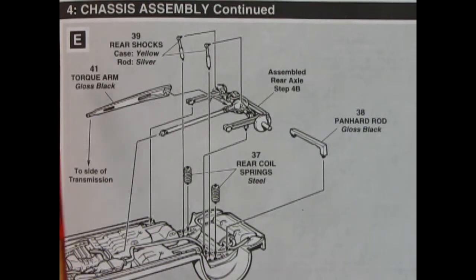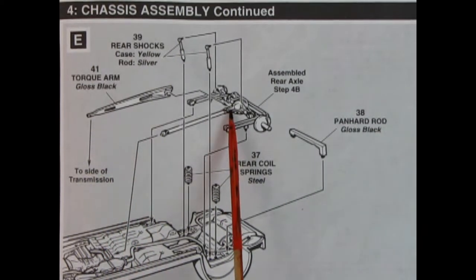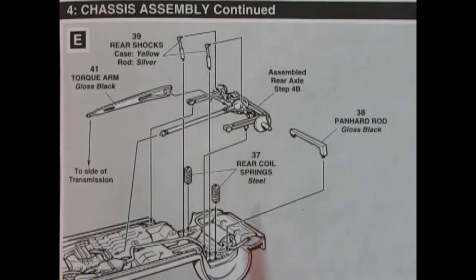In step E we add our rear assembled differential into the chassis. First you put down your coil springs then the rear differential. There's a panhard rod which will glue here and I believe that comes to the back of the differential. We also have a torque arm which glues to the side of the transmission all the way to the rear differential.